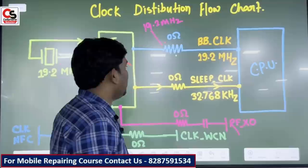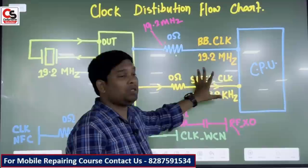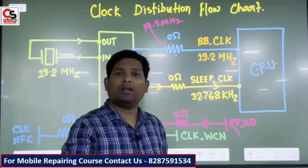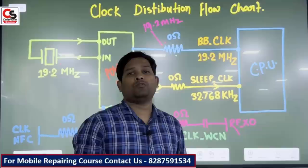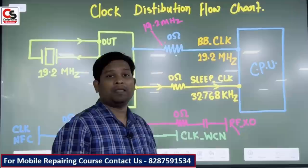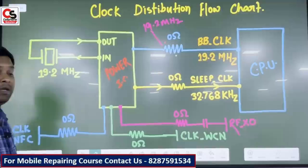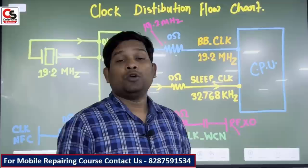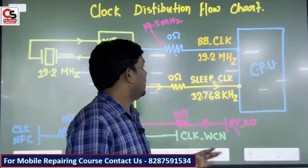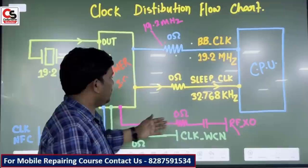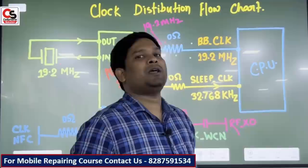We also have a sleep clock in our phone. You will know that an RTC crystal has also been used — it has a frequency of 32.768 kHz. It is called a sleep clock and it also goes to the CPU. There is also a clock called RFXO. The WTR network IC also requires a clock, and it is distributed from the power IC — it is called RFXO. There is also a WCN clock for GPS and Wi-Fi sections. There is also an NFC clock for the NFC controller in flagship models, and besides audio IC, it also has a clock. If the BB clock is missing, your phone will be dead. If RFXO is missing, there will be a fault in the network section — it will be unknown. This BB clock is very important.